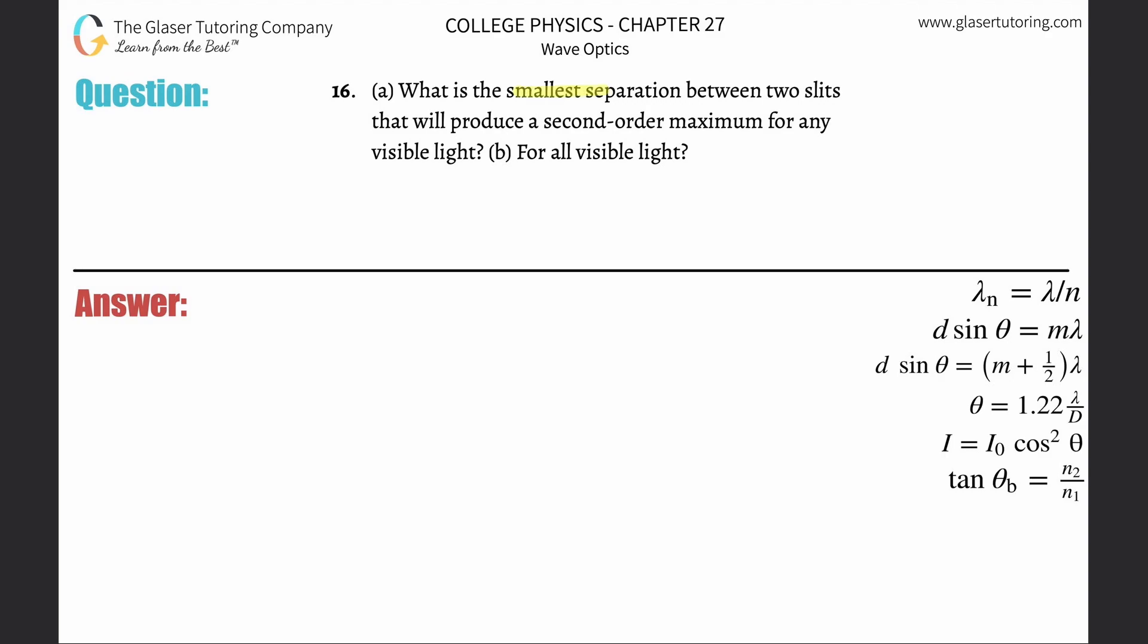Number 16, letter a. What is the smallest separation between two slits that will produce a second-order maximum for any visible light? So we're talking about maximums, therefore we're dealing with the constructive formula on the right-hand side.